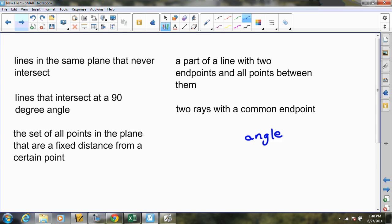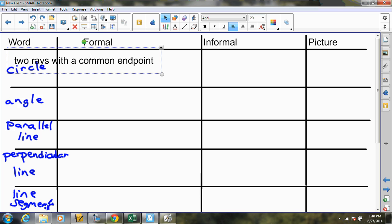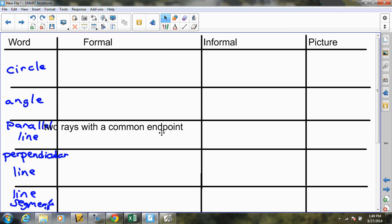So, let's start off with the word angle. Which one of these seems like it would fit angle? Lines in the same plane that never intersect, lines that intersect at a 90 degree angle, all points in a plane at a fixed distance from a certain point, part of a line with two endpoints and all the points between, or two rays with a common endpoint? Hoping you noted, it's this one.